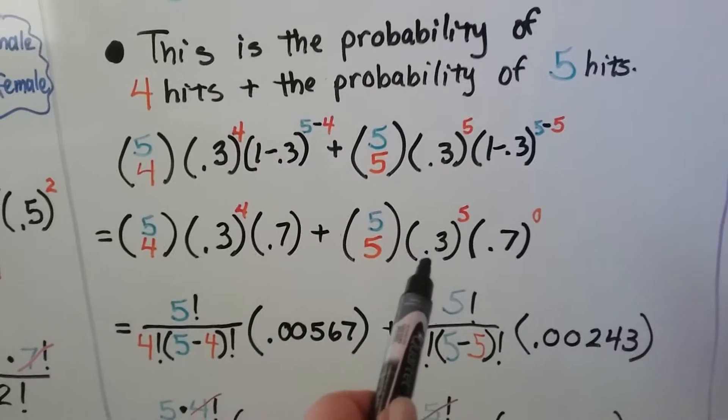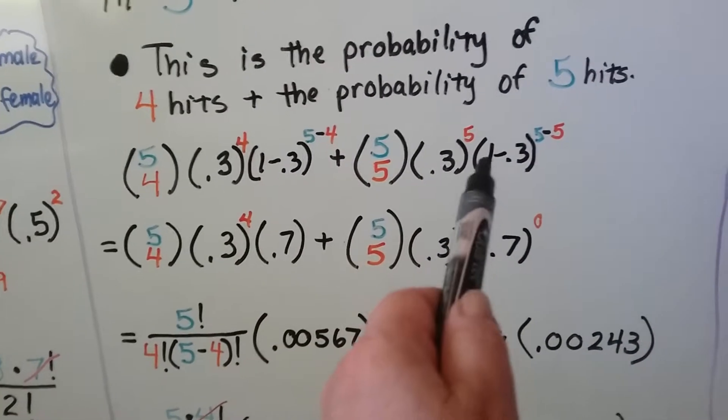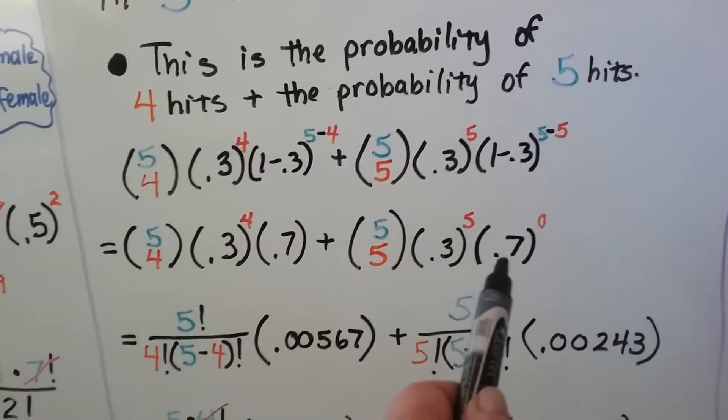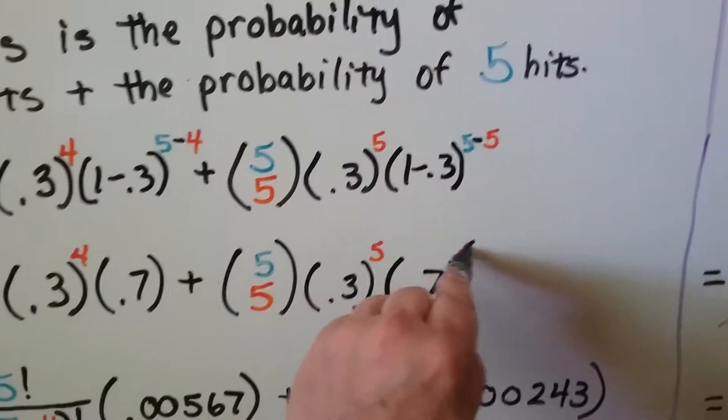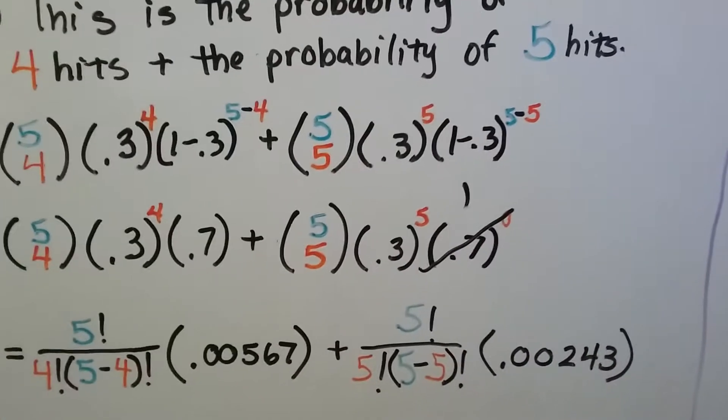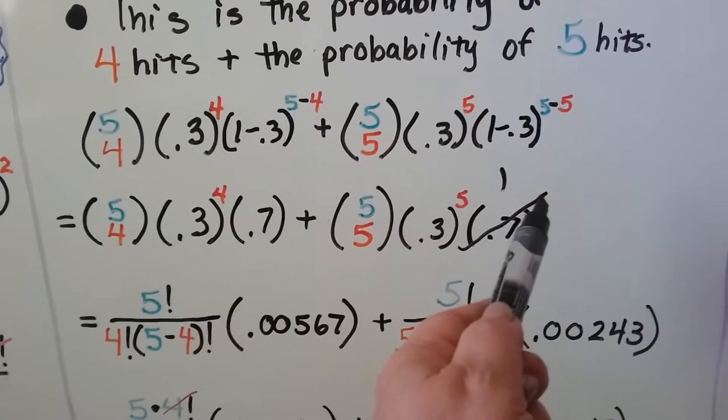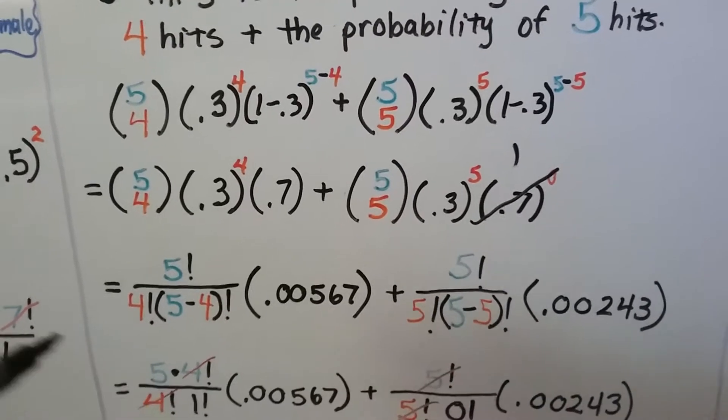On this side, we have one minus 0.3, which is 0.7. But because it's to the five minus five, it's to the zero power. So this actually becomes a one. Anything to a zero exponent is a one.